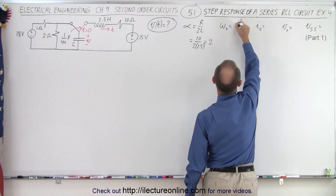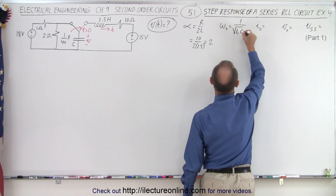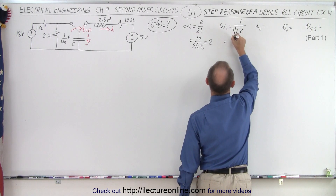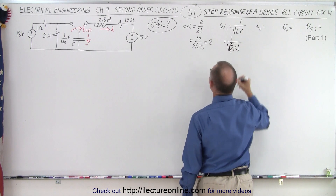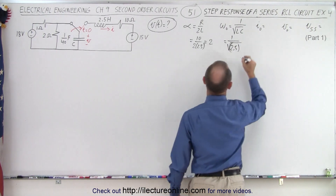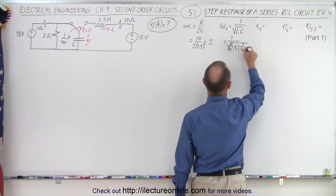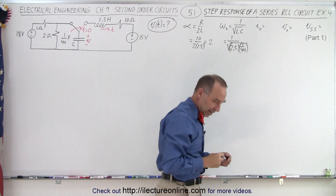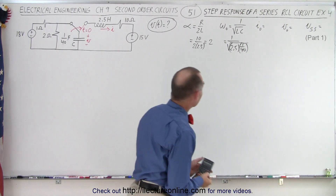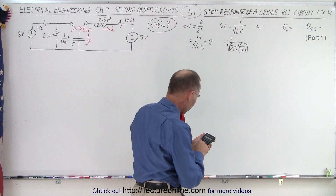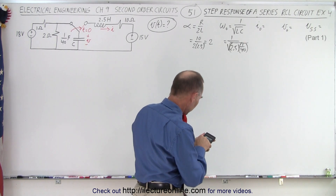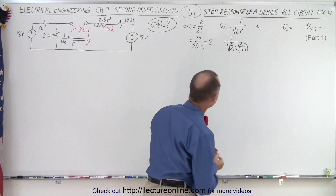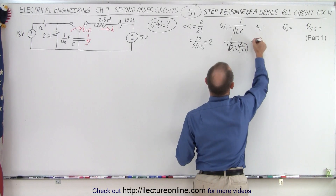Omega sub-naught is equal to 1 over the square root of L times C. In this case, that's 1 over the square root of L, which is 2.5, and C is equal to 1/40. Taking the square root of 2.5 divided by 40 and then the inverse gives us 4. So omega sub-naught equals 4.